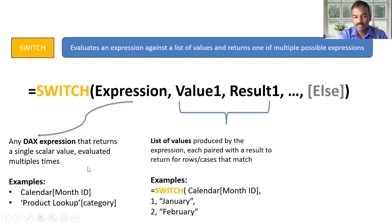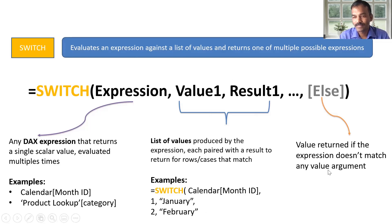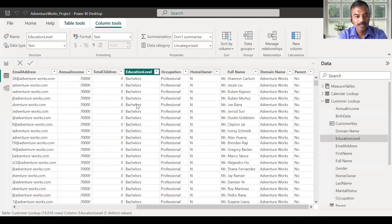For example, we have an expression with January and February. We have a value and result. If we have a result, we have a particular value and result match. So if we have a result, we have a value display. If we have a value display, we have a value match. So we have practically changed the value.